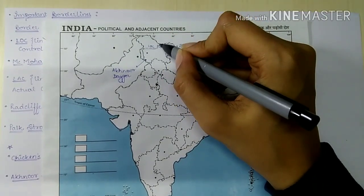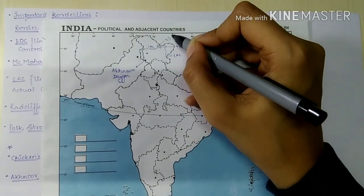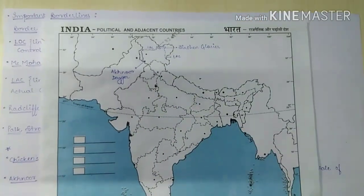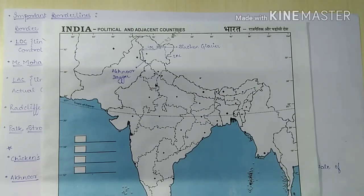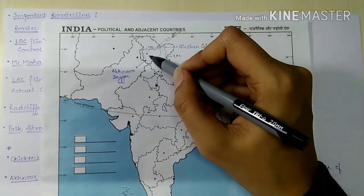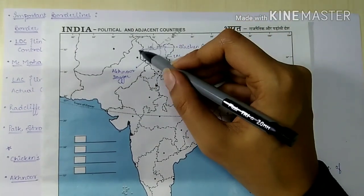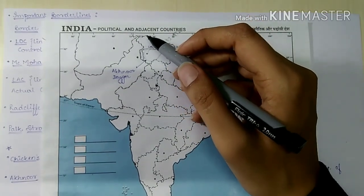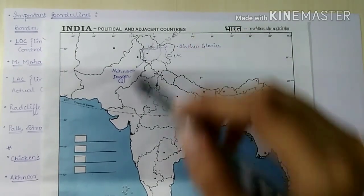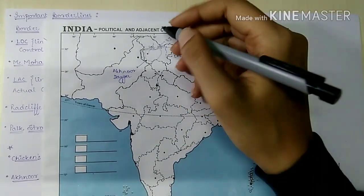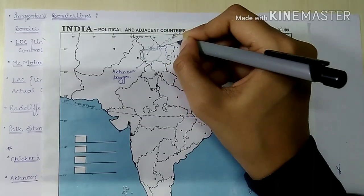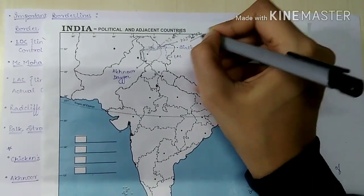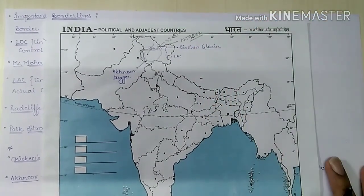The LOC was formed on 3rd July 1972. The Indian part of this area is known as Jammu and Kashmir, while the Pakistani part is known as Azad Jammu and Kashmir and Gilgit-Baltistan. The northernmost point of the LOC is named NJ9842.